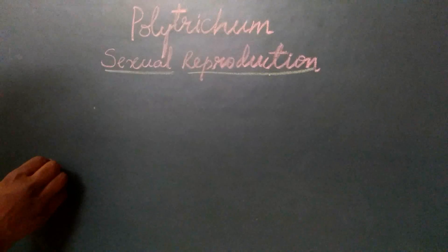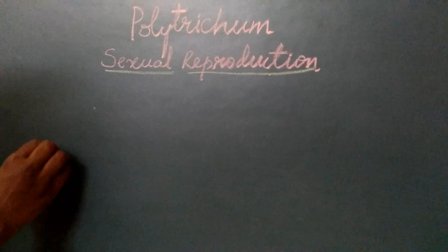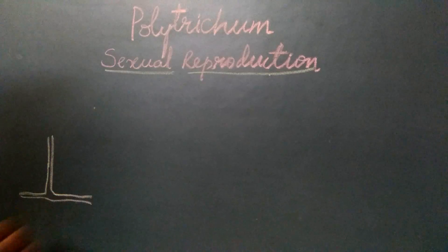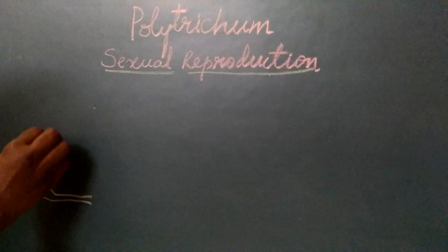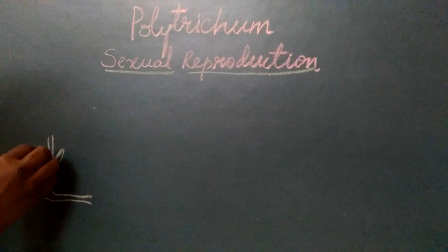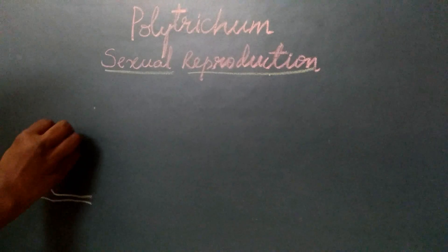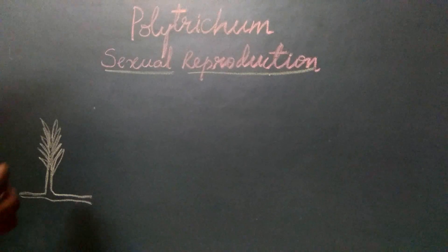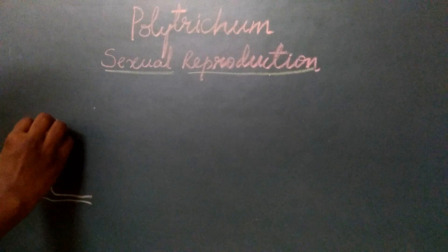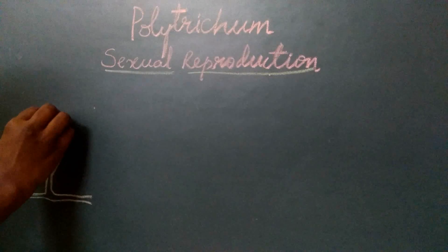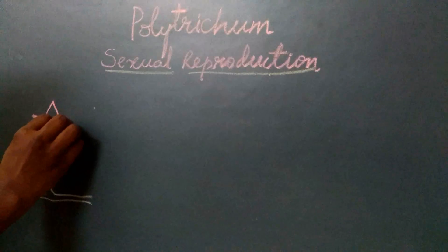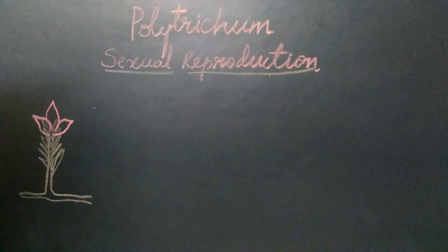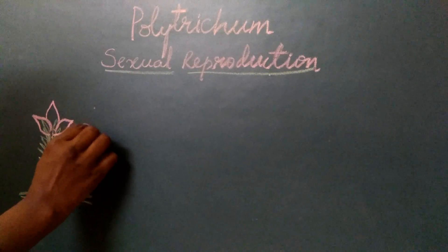When we look at the male plant, it shows an underground rhizome, a horizontally creeping structure, and an aerial shoot. The aerial shoot has leaf-like structures. At the end of the growing season — that is, at the end of vegetative growth — at the tip of the male plant, we find a cluster of leaves. These leaves are called the perigoneal leaves.